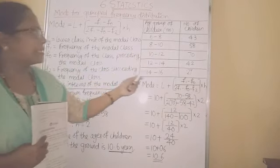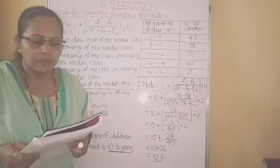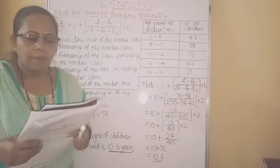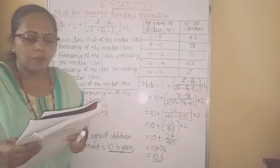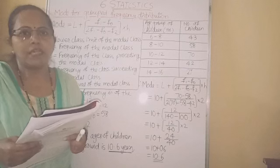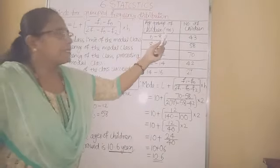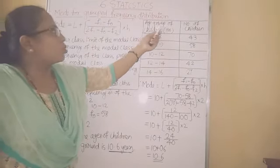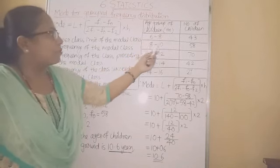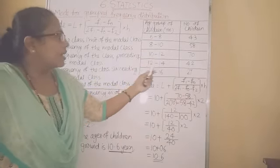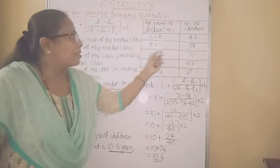Let us solve an example. The question is: the classification of children according to their ages playing on the ground is shown in the following table. Find the mode of ages of the children. In this table, we have age group of children given in years: 6 to 8, 8 to 10, 10 to 12, 12 to 14, 14 to 16 years, and number of children given for each age group.